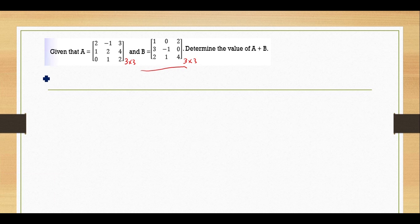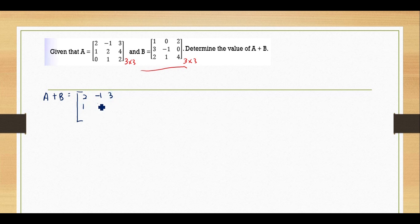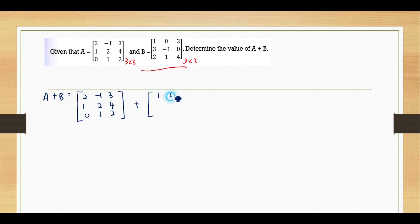So A plus B. A plus B equals the matrix A: 2, negative 1, 3, 1, 2, 4, 0, 1, 2; plus matrix B: 1, 0, 2, 3, negative 1, 0, 2, 1, 4.